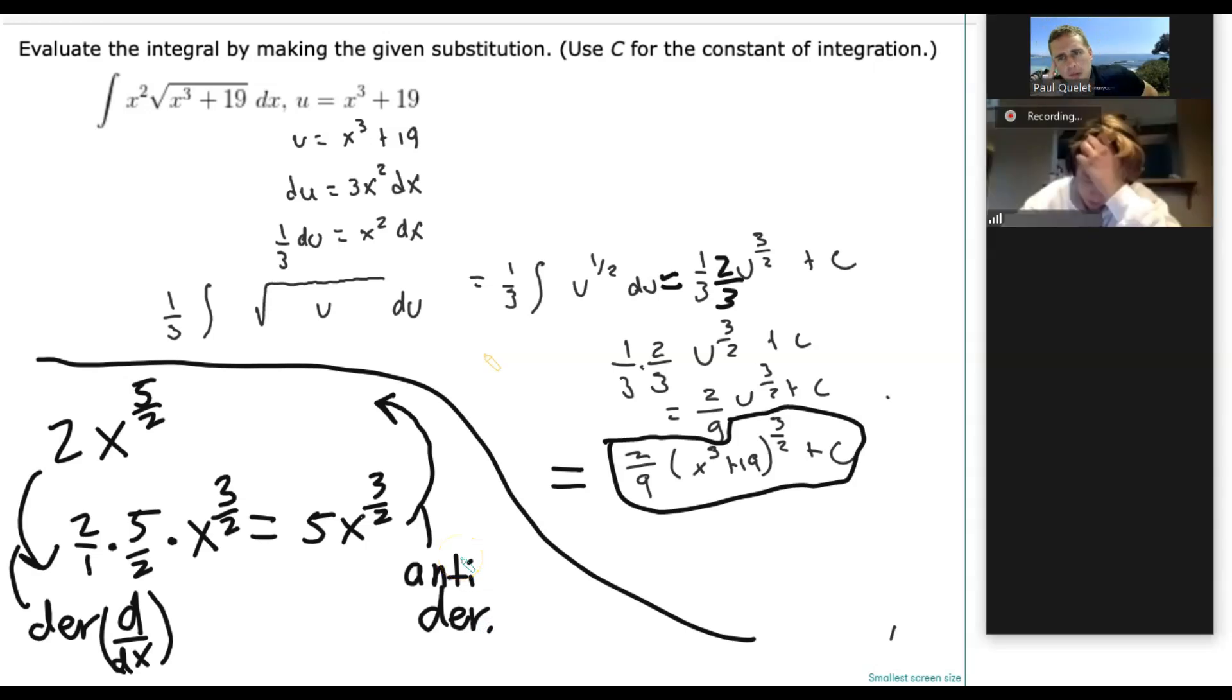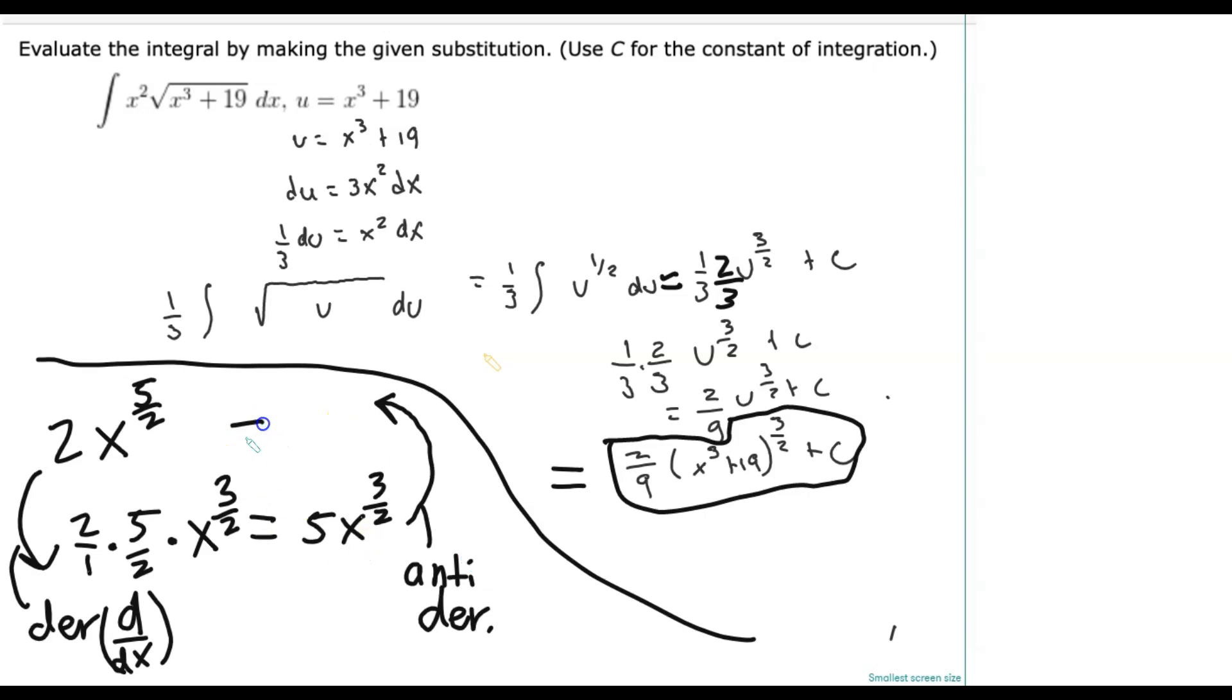Well, in order to do that, we're going to have to go 5 times x to the 5/2 power, multiplied by 2/5. Now do you see that? Previously the twos had canceled to give us the five.